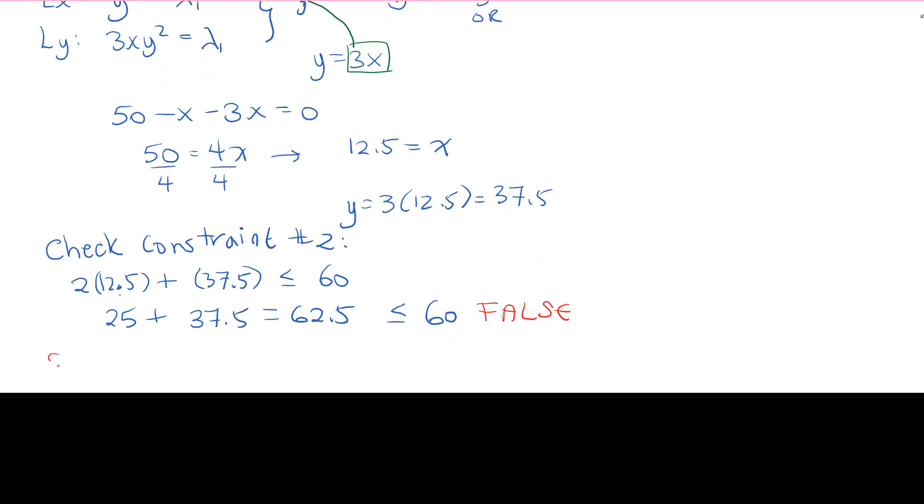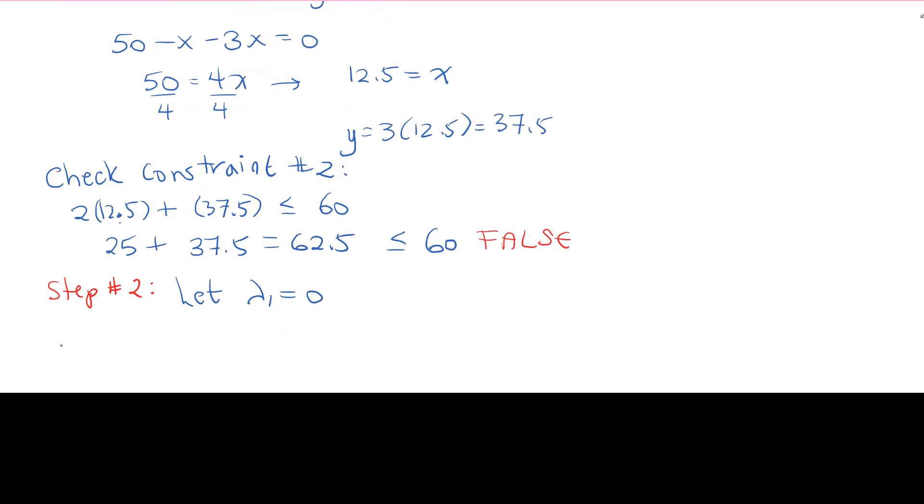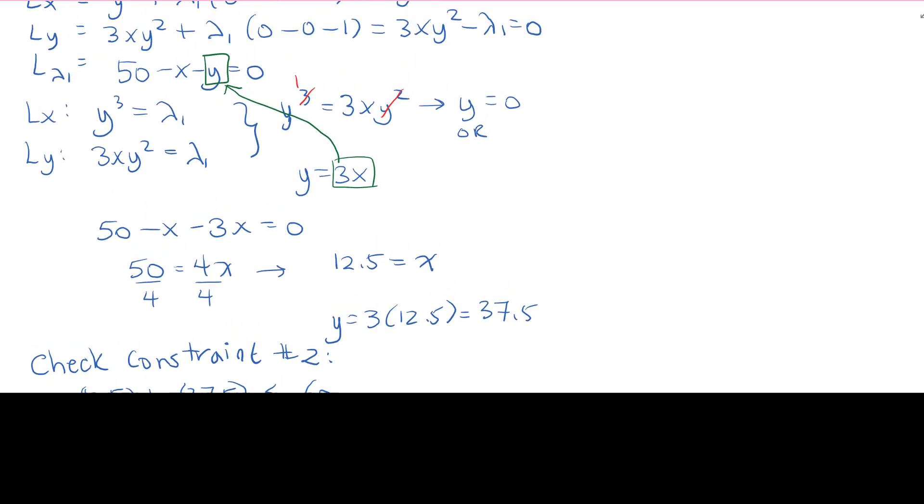Where we let lambda 1 equal to 0, meaning that we assume constraint number 1 was satisfied. Remember, constraint number 1 was our budget constraint. So we rewrite our L.